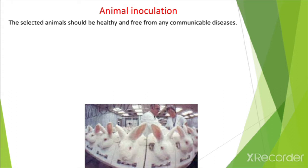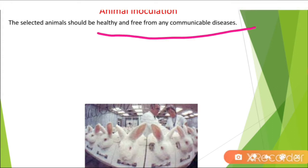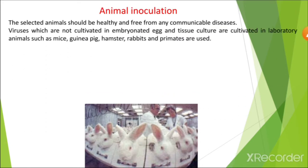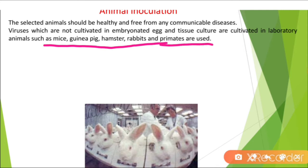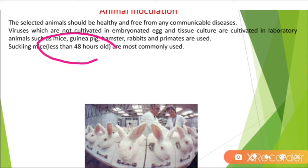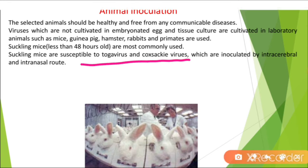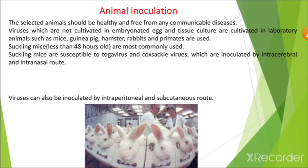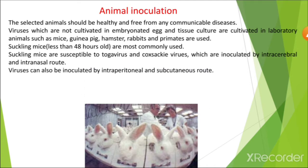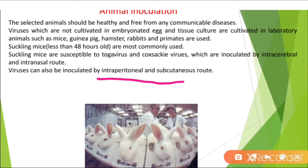In the animal inoculation system, the selected animal should be healthy and free from any communicable diseases. The different types of animals used include mice, guinea pigs, hamsters, rabbits, and primates. Suckling mice are mostly used for the isolation of viruses — they are less than 48 hours old and are susceptible to togaviruses and coxsackieviruses. The viruses are inoculated by two routes: intraperitoneal and subcutaneous.